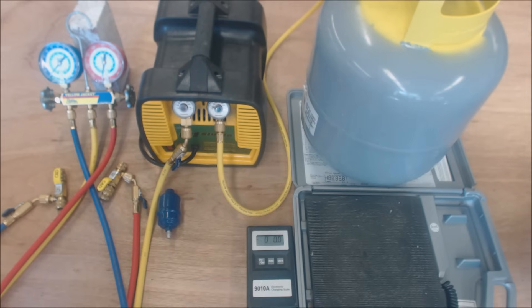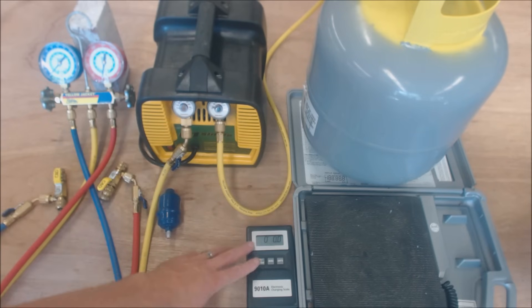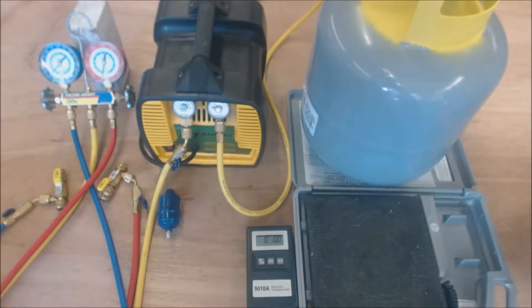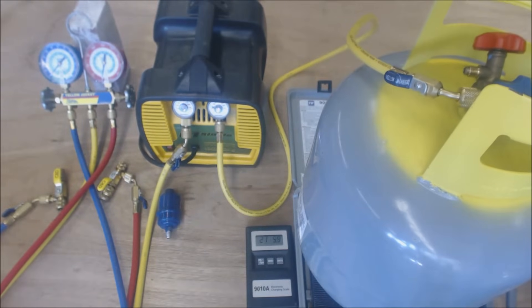First things first, the recovery bottle: we turn our scale on, it reads zero, and then we're going to need to weigh it to check our initial weight in the tank. We're reading 36 pounds and 12 ounces.